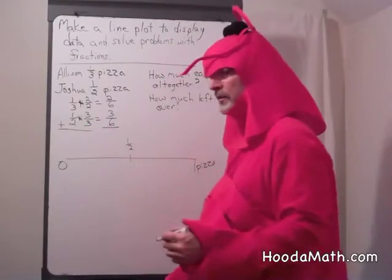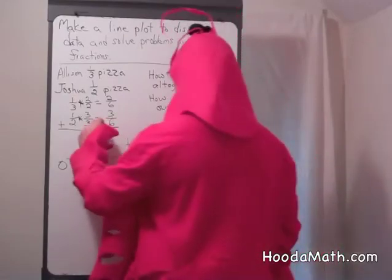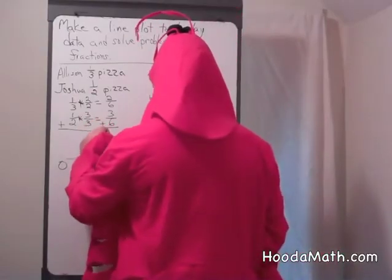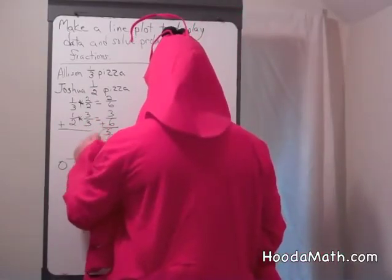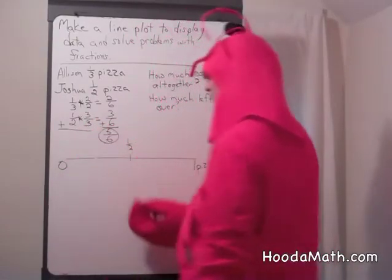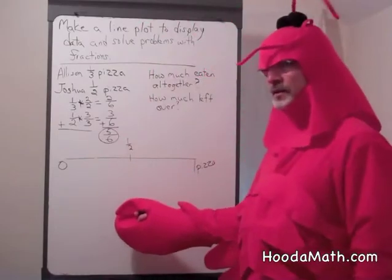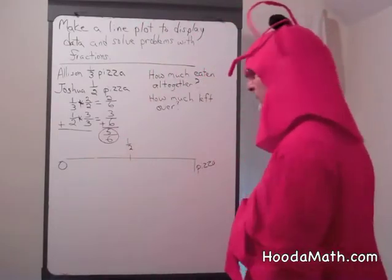So 1 third equals 2 sixths and 1 half equals 3 sixths. To find out how much they ate altogether, you add and get 5 sixths. Let's try it on this line plot.